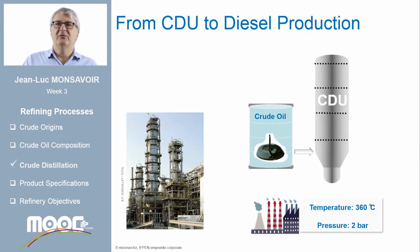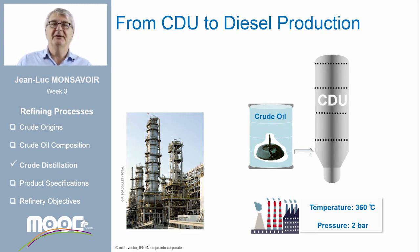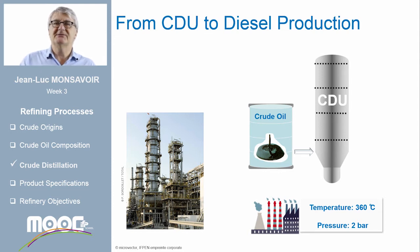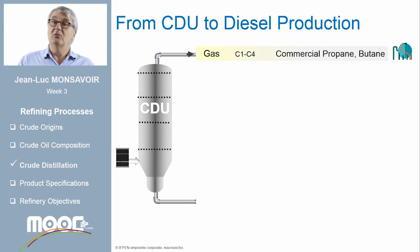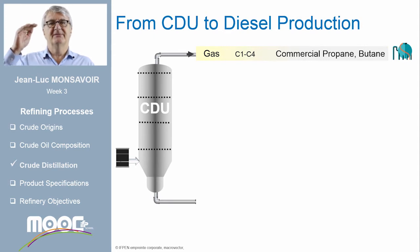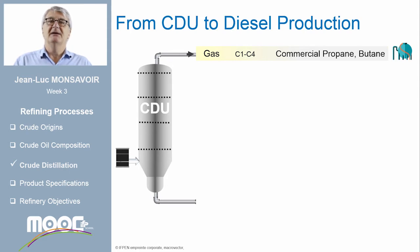Let's now look at the first unit of a refinery: the crude distillation unit, or CDU. This unit is operated at high temperatures, around 360°C at the bottom, and a pressure of 2 bar gauge. This first unit divides the crude into different smaller petroleum cuts used as bases for everyday commercial products. At the top of the CDU, we have the lighter compounds with the lowest carbon number and lowest boiling temperature. First, we have the gas, with carbon numbers between 1 and 4, including methane, ethane, propane and butane, which are used as fuel.